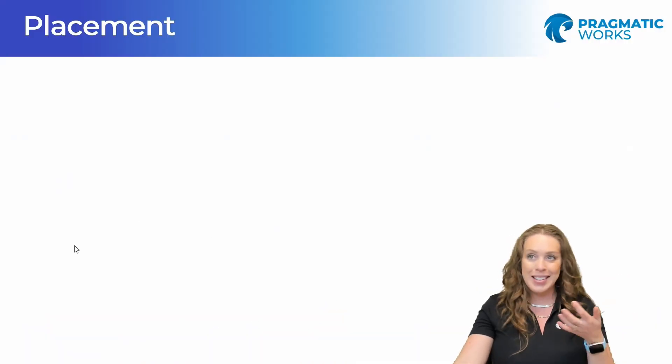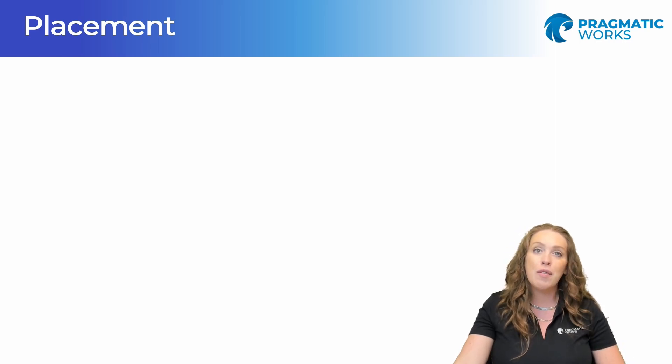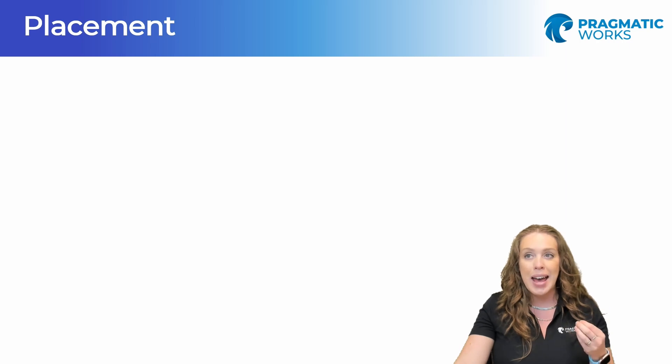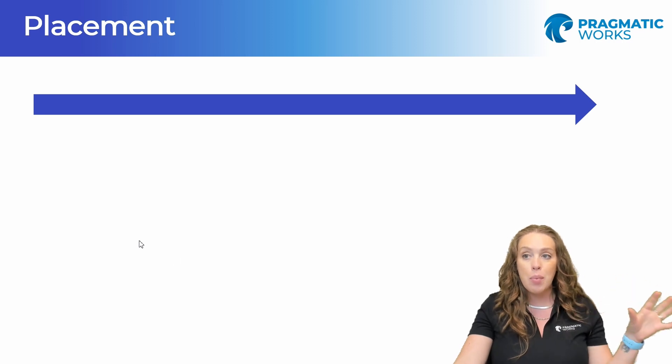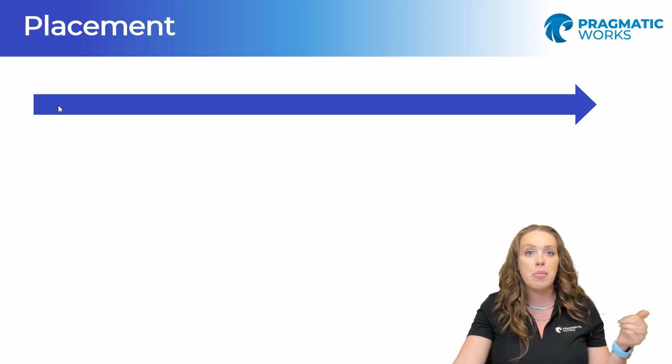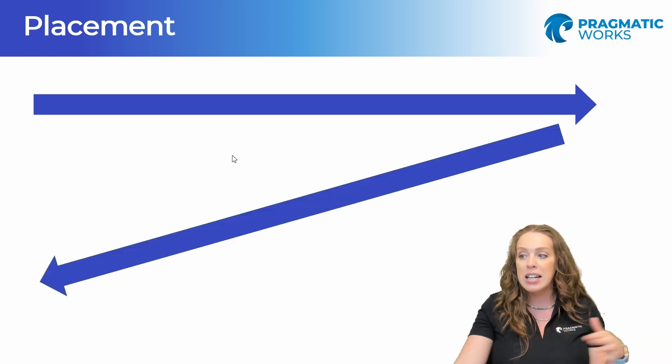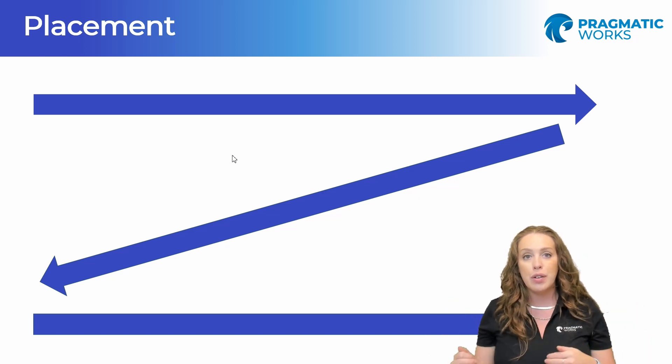So first off we have placement. Let's get it kicked off with that. Good placement of report objects contributes to a very ordered and structured report design. Generally you should be placing the most important information up here in that top left corner and then arrange your information left to right and top to bottom because this is how your eyes are going to read.